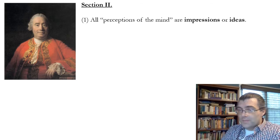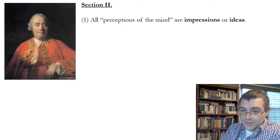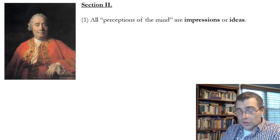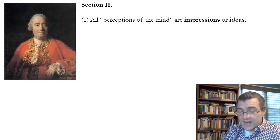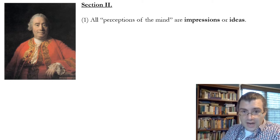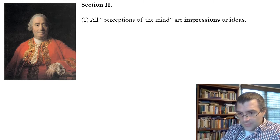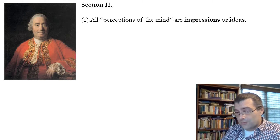He makes the claim that all of our mental contents or as he calls it our perceptions or perceptions of the mind are of one of two types. So he's saying everything that there is in our minds is of one of two types. It's either what he calls an impression or an idea. And he's going to start making this distinction in the first paragraph.